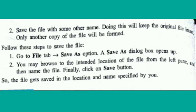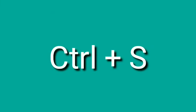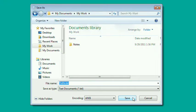The Save As option is used to create a file with some other name while keeping the original file intact. Another copy of the file will be created, and any changes made to that file will not affect the original file. There is a shortcut key to save a file: Ctrl+S. For the first time, it will launch a Save As dialog box where you enter the file name and click Save. Subsequently, Ctrl+S will directly save the document without showing the dialog box.